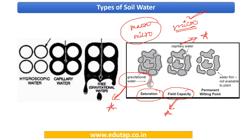Moving further, the water present in the micropores also starts to disappear. Finally, there is a very thin layer of water stuck to the surface of the soil particles. This water cannot be utilized by the plant, and this is the permanent wilting point situation. This particular water is known as hygroscopic water, and it is actually attached as a thin film to the surface of the soil particles.